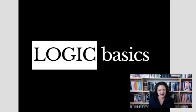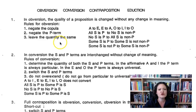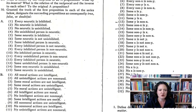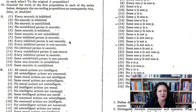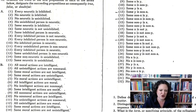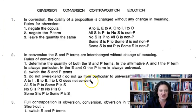Welcome back to Logic Basics. Today we're going to learn about eduction. If you recall, last time we learned the rules of obversion and conversion for the square of opposition. We are headed towards doing problems and fitting the statements on the square of opposition or on the full contrapositive square, figuring out whether these statements are true, false, or doubtful. So today I want to show you how to do eduction.